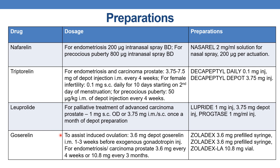The next drug is goserelin. To assist induced ovulation: 3.6 mg depot goserelin IM 1 to 3 weeks before exogenous gonadotrophin injection. For endometriosis or carcinoma of prostate: 3.6 mg every 4 weeks or 10.8 mg every 3 months. Marketed preparations are Zoladex 3.6 mg prefilled syringe and Zoladex LA 10.8 mg.